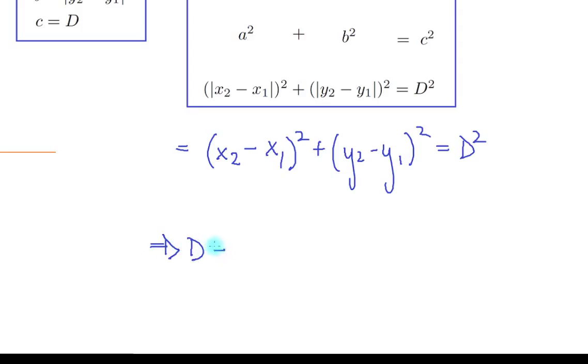Now the distance formula: D = √[(x₂ - x₁)² + (y₂ - y₁)²]. This is the distance formula.